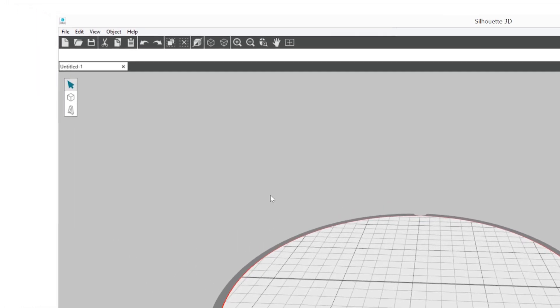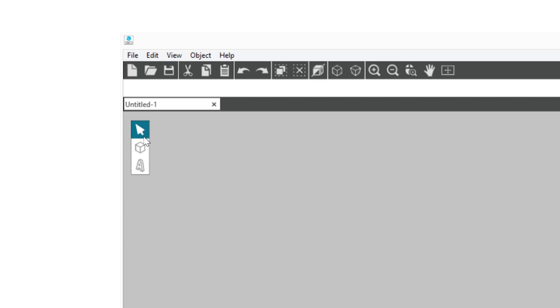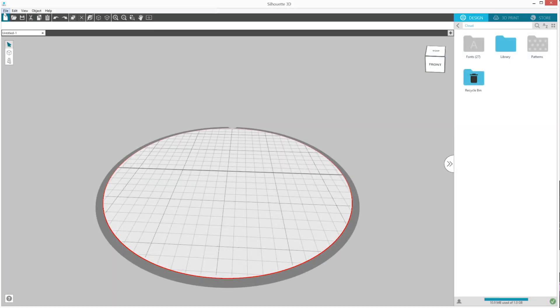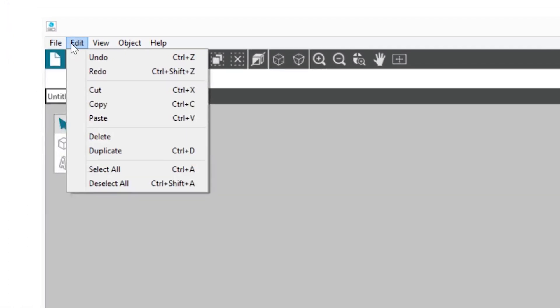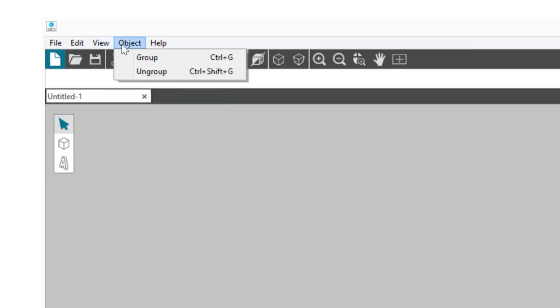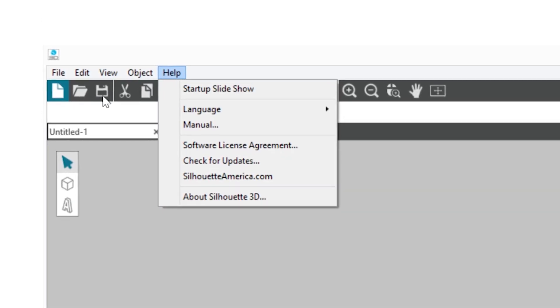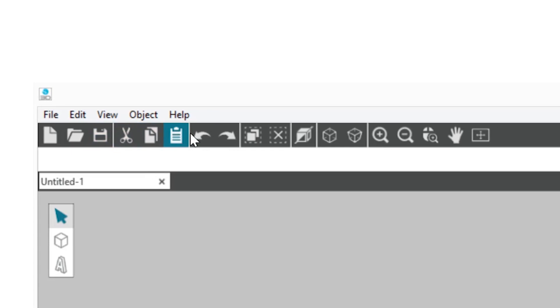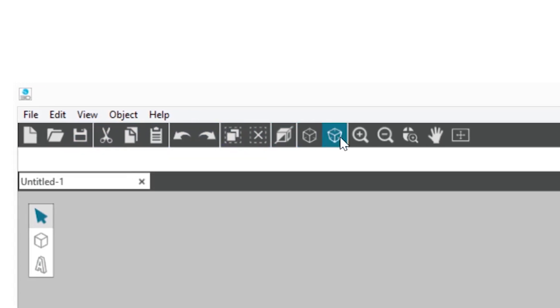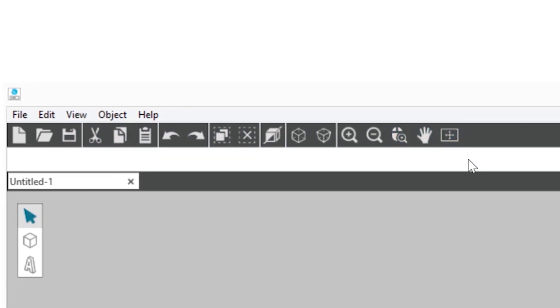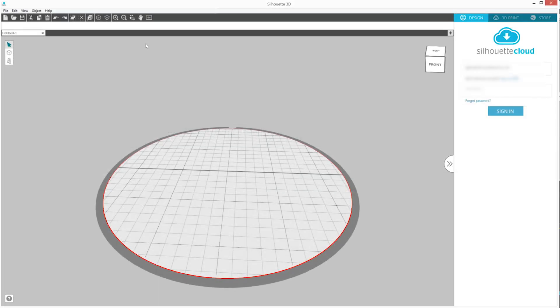There is a bar on the left-hand side where you will go to create your own shapes and text. At the top of the Silhouette 3D window, you'll see your document tools. On the right-hand side of the screen, sign in to your pre-existing or newly created Silhouette account to access the designs in your library.